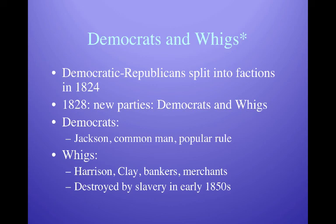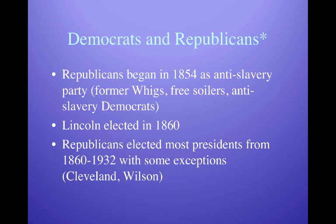The Whigs picked up roughly where the Federalists had left off — the party of cities, urban interests, commerce, and trade. Prominent members included Henry Clay and William Henry Harrison. They were a coalition between northern industrialists and southern plantation owners. Ultimately, slavery destroyed them in the 1850s because the Whigs couldn't reach any agreement on the issue, so they split apart and died out.